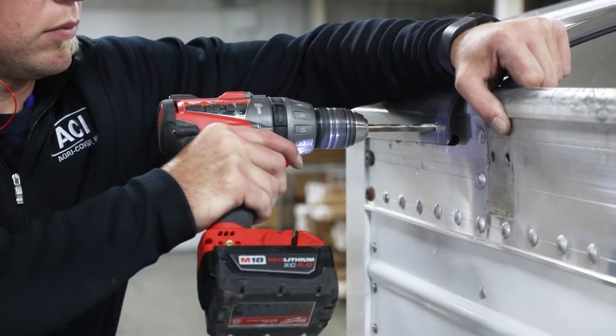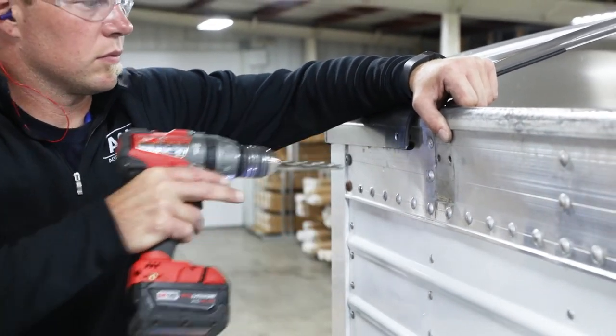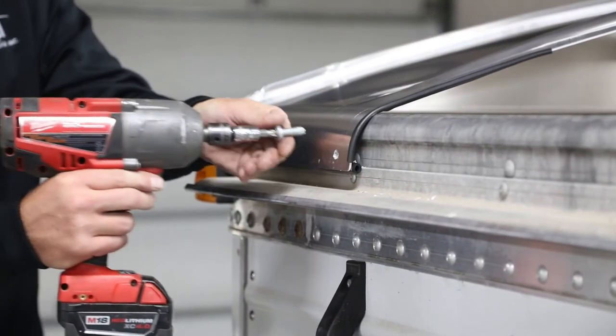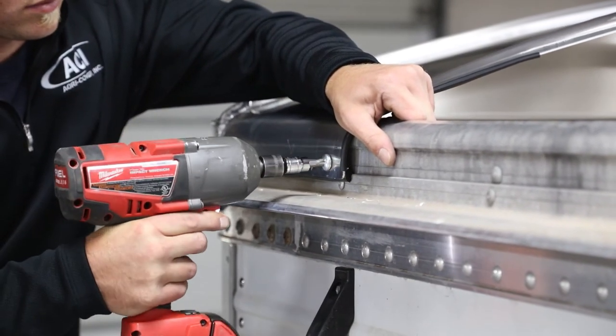Next, use hole in each side of end cap as template to drill into box. Use T45 bit to turn self-threading Torx head bolt into each hole.